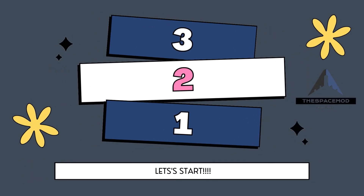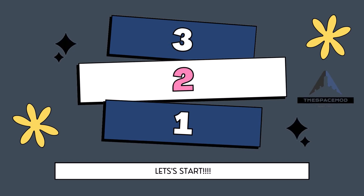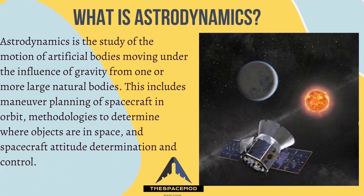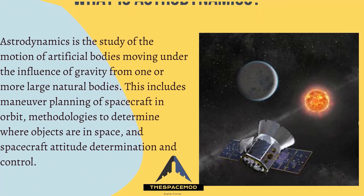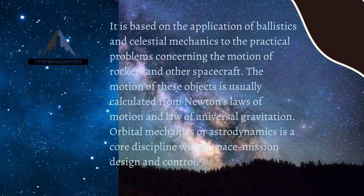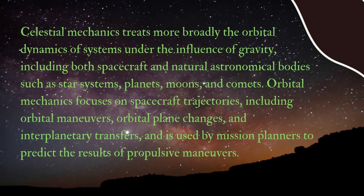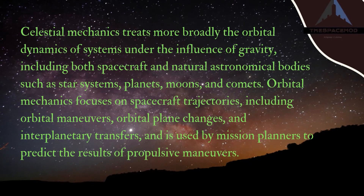What is astrodynamics? Astrodynamics is the study of the motion of artificial bodies moving under the influence of gravity from one or more large natural bodies. This includes maneuver planning of spacecraft in orbit.